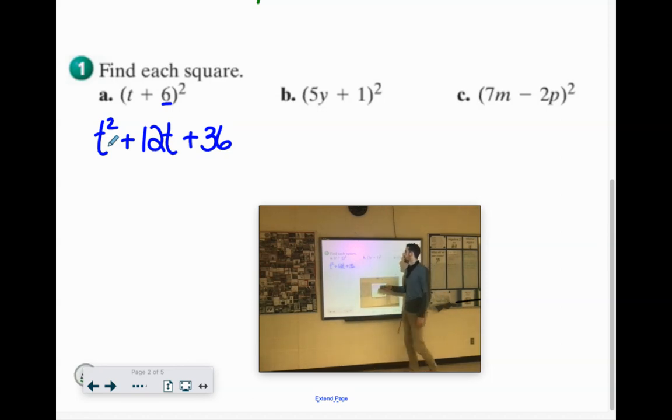Alright, two more. 5Y times 5Y is 25Y to the second. 5Y times 1 is 5Y. Then we need to double that. So 10Y. And then the last term is 1 times 1, which is 1.